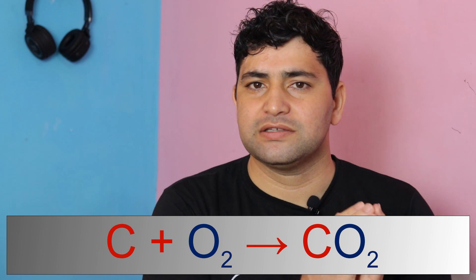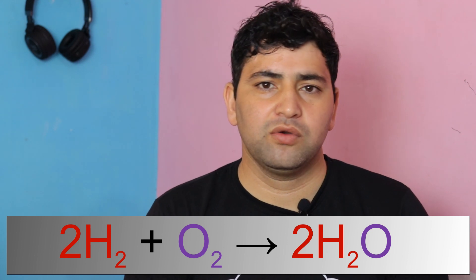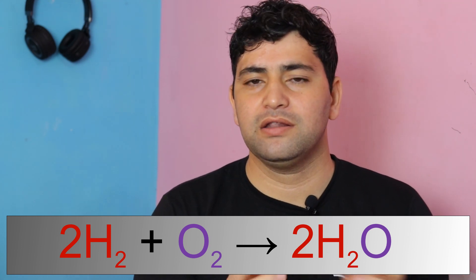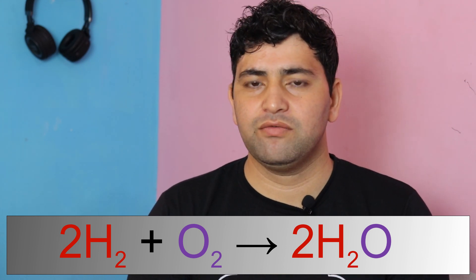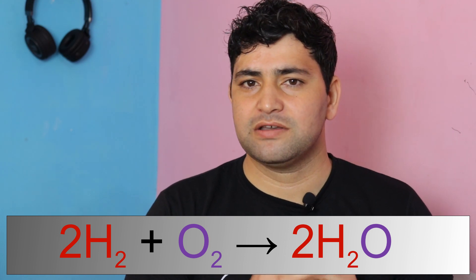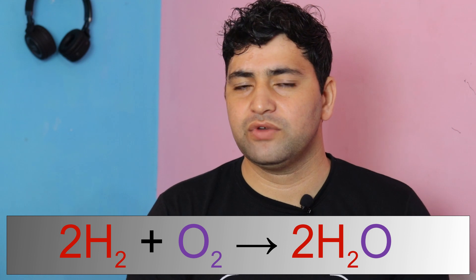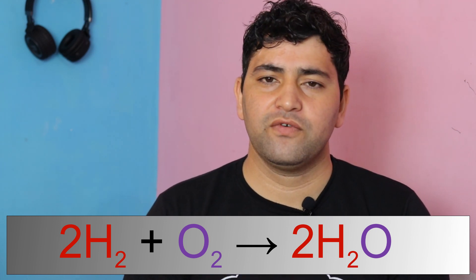The second example from NCERT book page seven is burning of hydrogen gas. In this reaction, a hydrogen gas molecule reacts with oxygen gas — hydrogen is burning in the presence of oxygen — and the product is water. We have two reactants, hydrogen and oxygen, combining to form a single product, water. Therefore, this is an example of combination reaction.